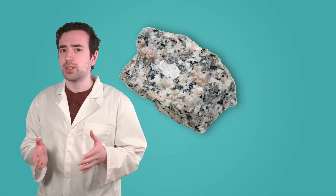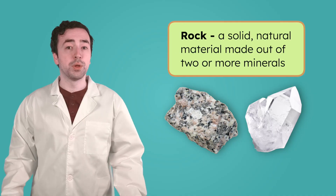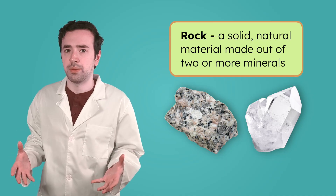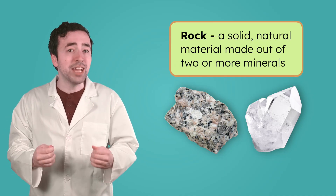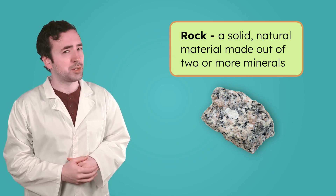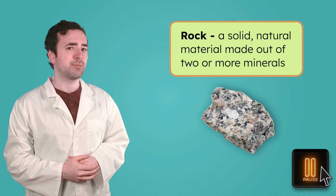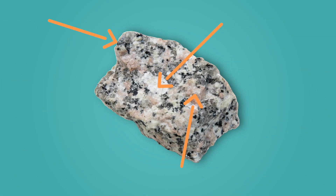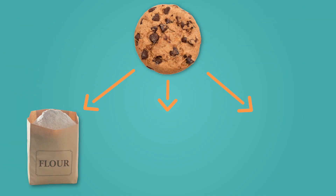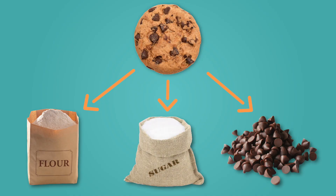How do you think rocks are different from minerals? Just like a mineral, a rock is a solid, natural material, but a rock isn't made out of just one material. A rock is actually made out of a combination of minerals. Take a close look at this rock — those different materials you notice are minerals. Think about this rock like a chocolate chip cookie: the minerals would be the flour, sugar, and of course, the chocolate chips. Minerals are the ingredients that make up rocks.